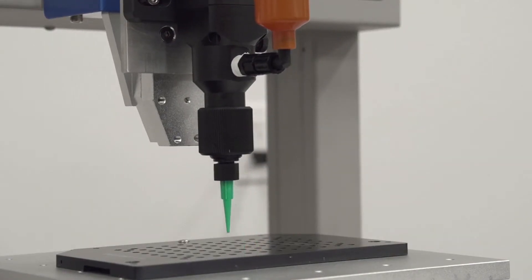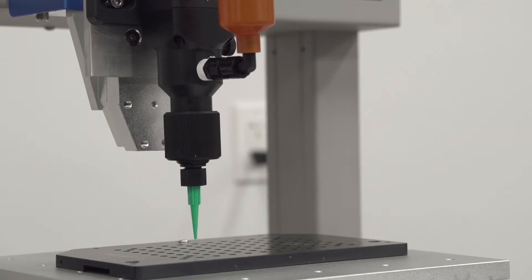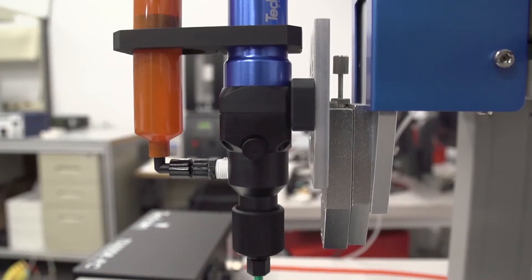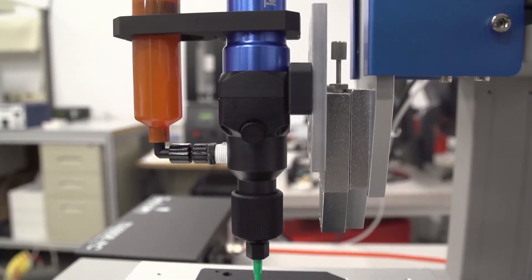Fluid is dispensed from the tip by means of a voltage signal applied to the motor, and shearing is achieved by a reverse Z-motion, or tip retraction.